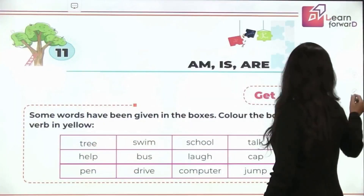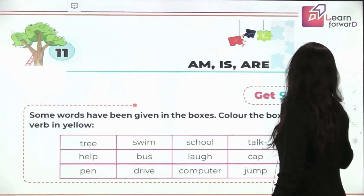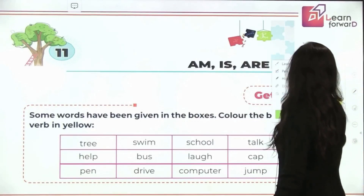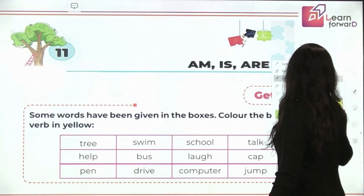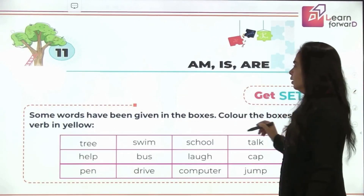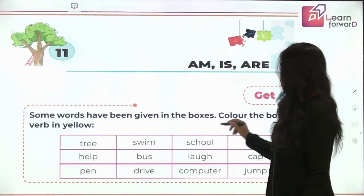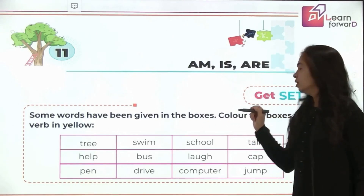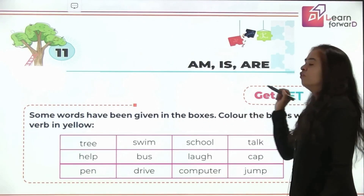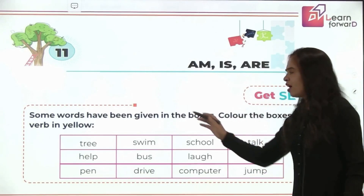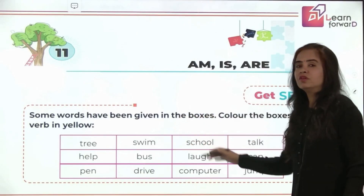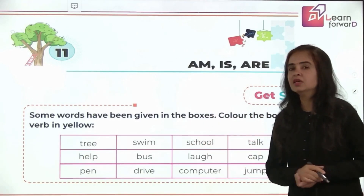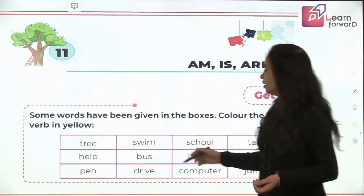Some words have been given in the boxes. What you have to do is color the boxes with a verb in yellow. So you have to pick out the verbs. Now, you know what verbs are — they are actions. Let's color them yellow.